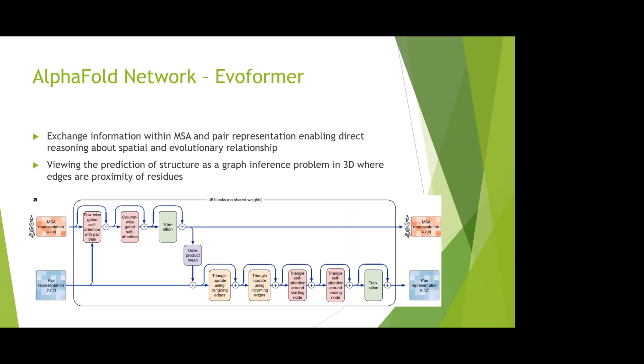Here we'll talk about more detailed technical details about the Evoformer. The figure below shows the detailed blocks in the Evoformer. It has 48 blocks with attention-based and non-attention-based components. It allows information exchange between the MSA representation and the pair representation. It can enable direct reasoning between the spatial and evolutionary relationships of the protein. It can view the prediction of the structure as a graph inference problem in 3D, where the edges of the graph are the proximity of residues.